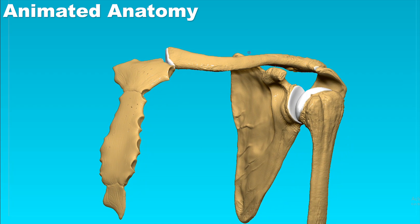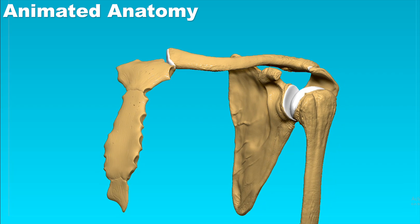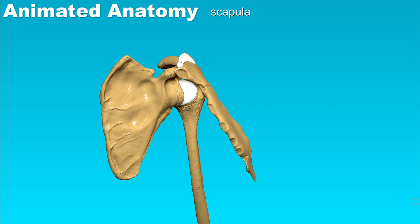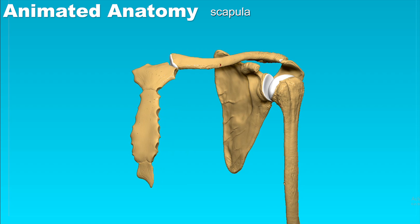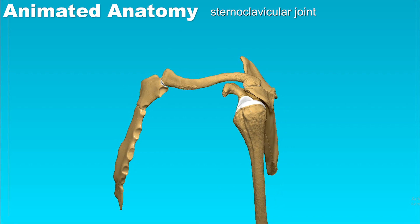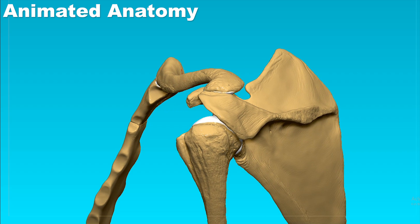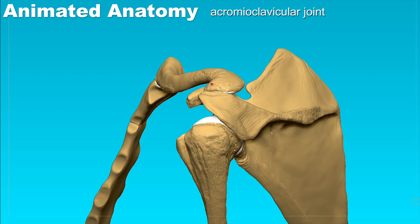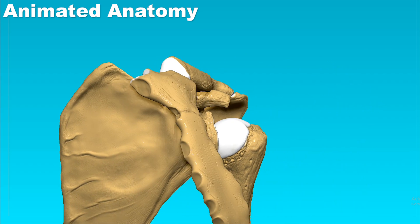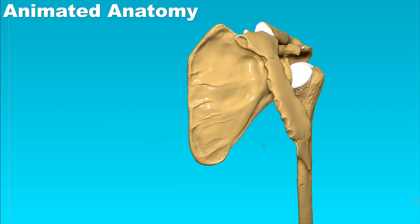Now let's move on to the scapula. I just want to mention that this is the sternoclavicular joint, and this here is the acromioclavicular joint. Now let's explain the scapula.